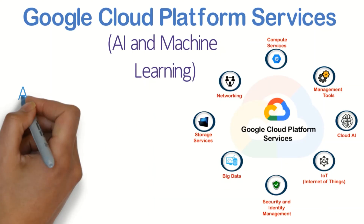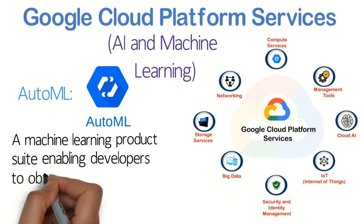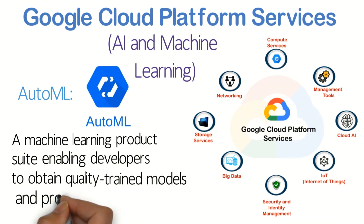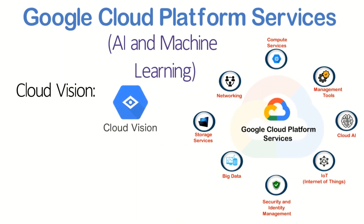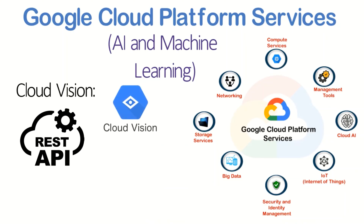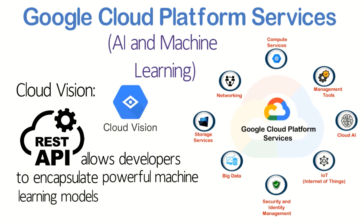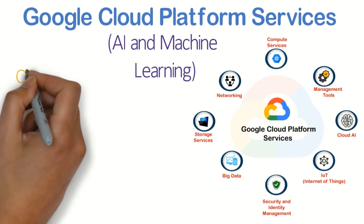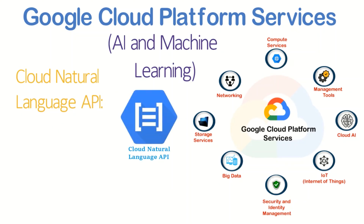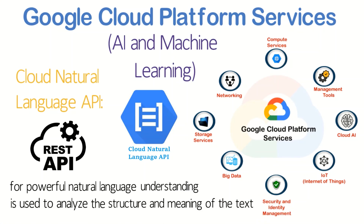AI and Machine Learning: AutoML is a machine learning product suite enabling developers to obtain quality trained models and provide their data sets. Cloud Vision is a REST API that allows developers to encapsulate powerful machine learning models to understand an image's content. Cloud Natural Language API is another REST API for powerful natural language understanding, used to analyze the structure and meaning of text.